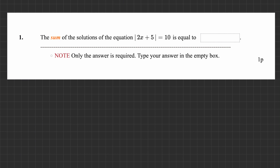Hello, in this video I'm going to solve the problems of quiz 1. The first question: the sum of the solutions of this equation, absolute value of 2x plus 5 equals 10, is equal to what? So first we have to solve this equation, find the solutions, and add them up, because the question is asking about the sum.